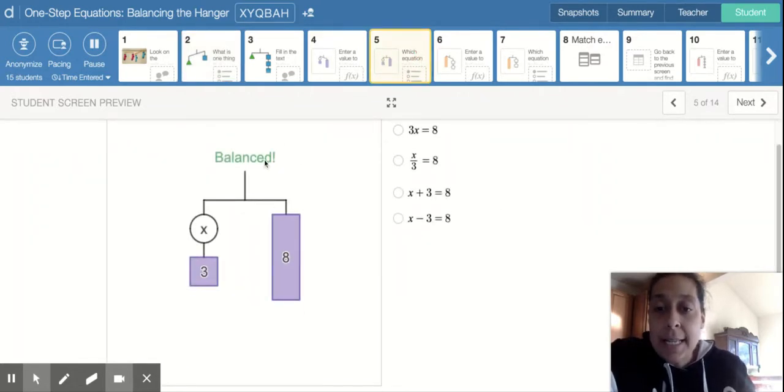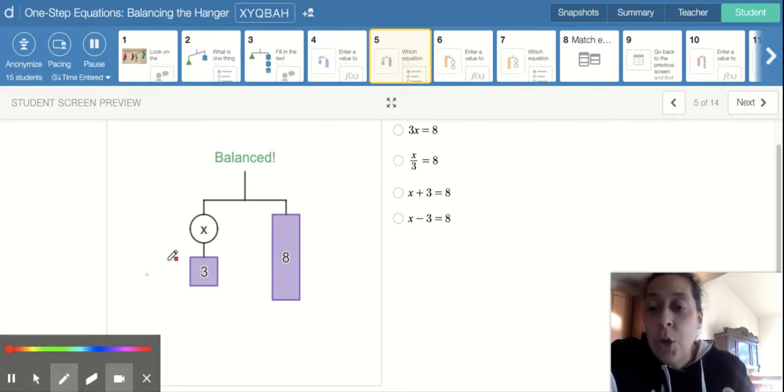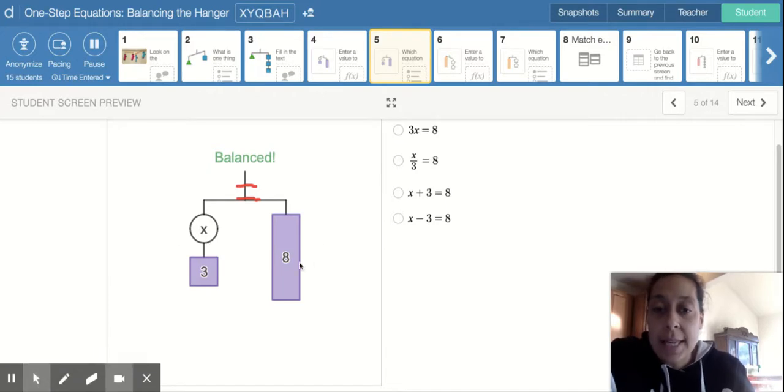As you can see, it says that it's balanced. So whenever we see that it is balanced, we should know that this means that we can put an equal sign here. So we know that this side equals this side. So we know that it should all equal eight. So every single one of these can be correct if we were just looking at the eight.